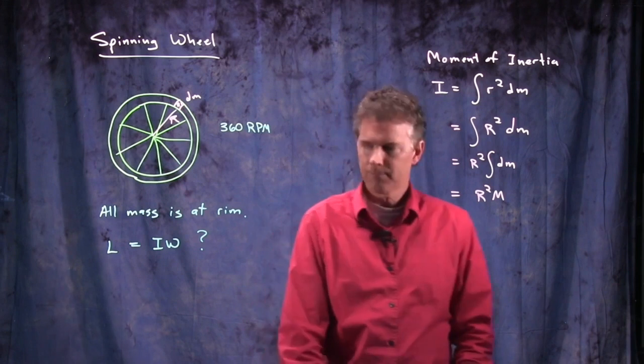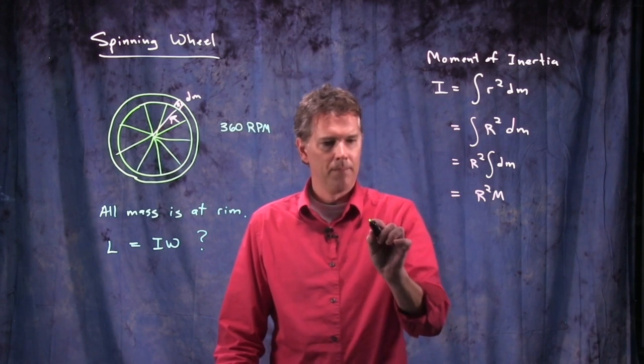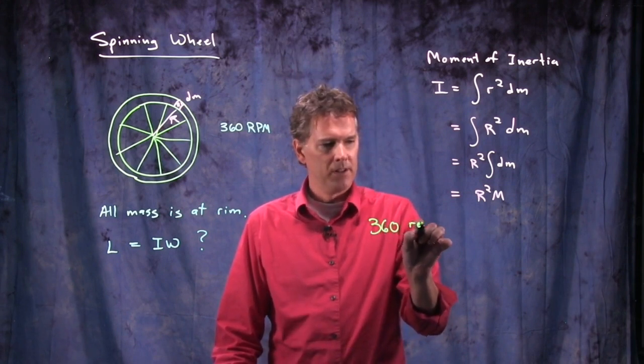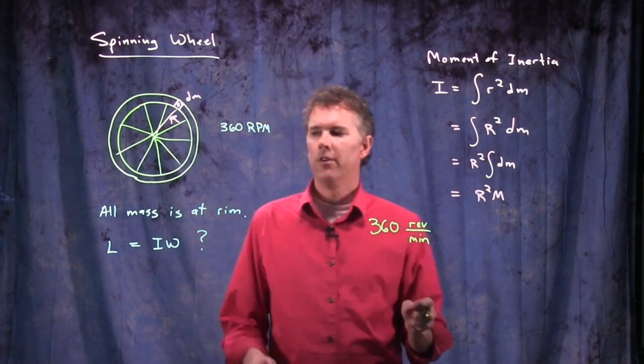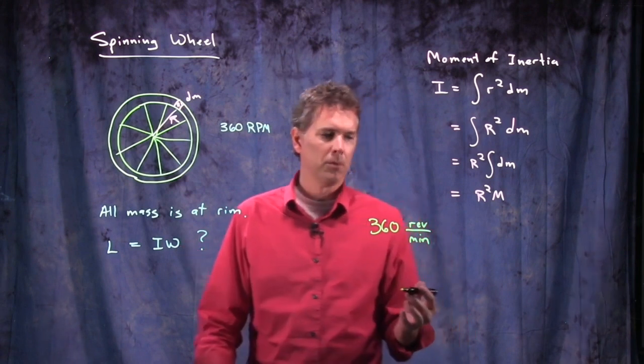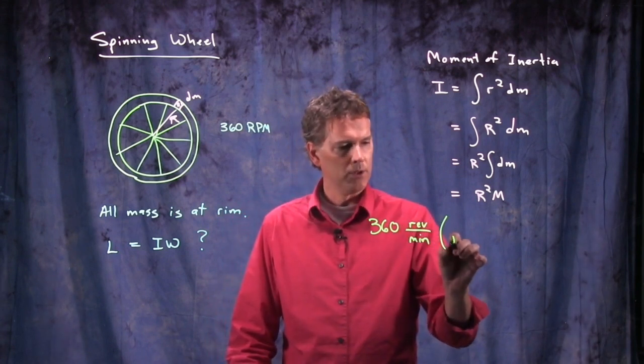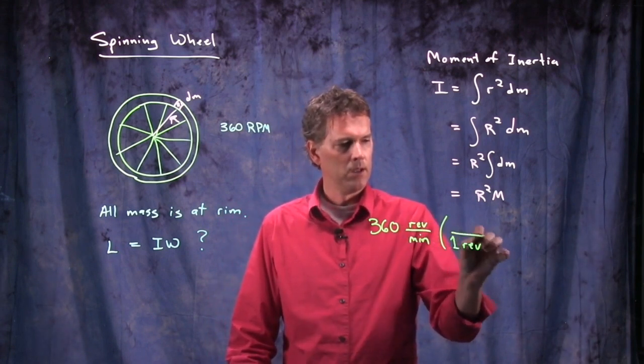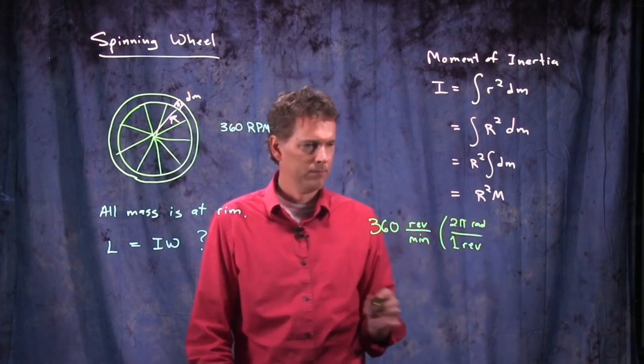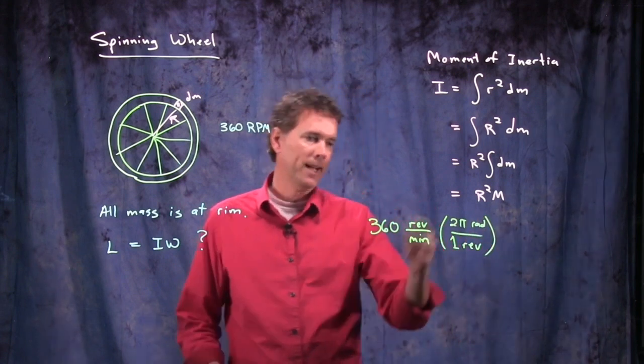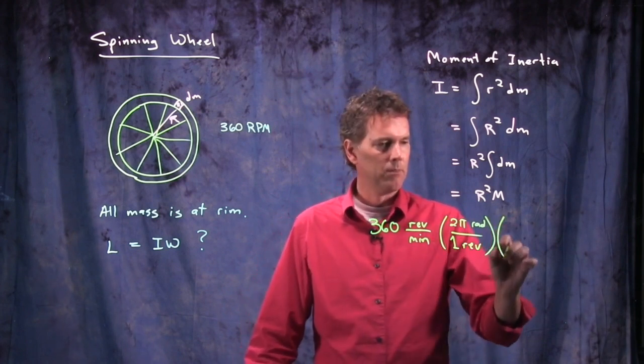What about omega? We know that this thing is going at 360 rpm. What is that? 360 revolutions per minute. If I want to convert that to omega, all I have to do is multiply it by one each time. So one revolution is 2 pi radians. So now we're going to get rid of revolutions and we'll convert to radians. We've got to get minutes into seconds, but we know how to do that.